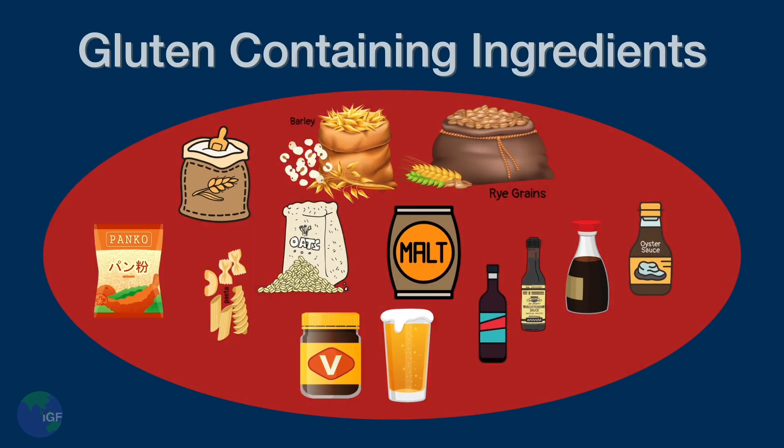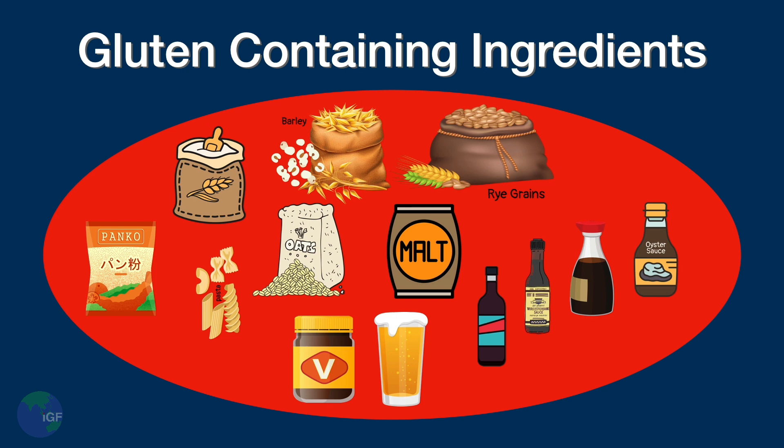Our first diet is gluten-free. People who are gluten-free cannot have any products made from wheat, rye, barley, or regular oats. Wheat-containing foods such as bread, breadcrumbs, and pasta must be eliminated. Barley is found in malt, Vegemite, and beer, and those are off limits as well.